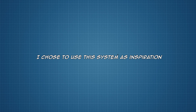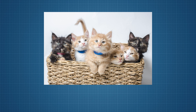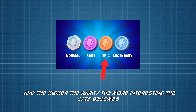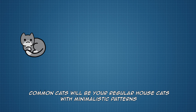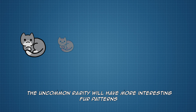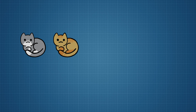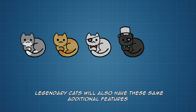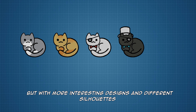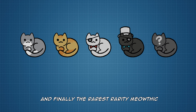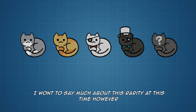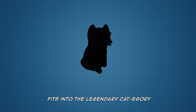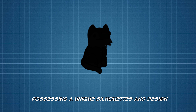I chose to use this system as inspiration to make a new cat character for my game. I want my game to have rarity levels for the cats the player can collect, and the higher the rarity, the more interesting the cat becomes. Common cats will be regular house cats with minimalistic patterns. The uncommon rarity will have more interesting fur patterns. Rare cats will have additional features like glasses or a bowtie. Legendary cats will have the same additional features but with more interesting designs and different silhouettes. The cat character I wanted to create as inspiration for the anti-cheat system fits into the legendary category, possessing a unique silhouette and design.